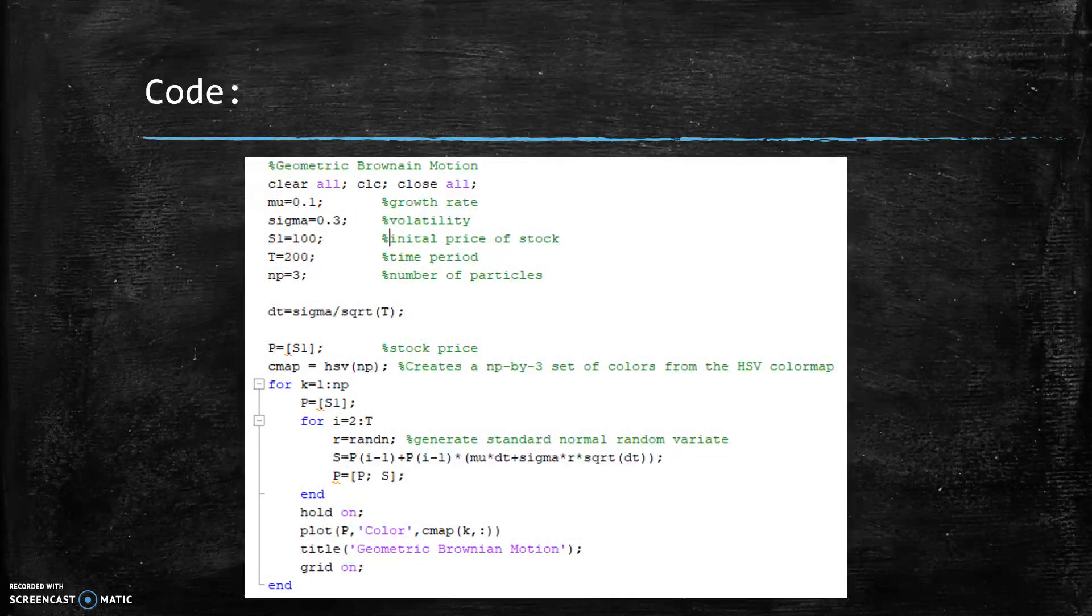So here's our code for that. So we've got mu being 0.1, sigma being 0.3. Our initial price of the stock that we're simulating is going to be 100. And our time period is going to be 200. And then we're going to do three particles again.